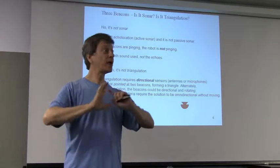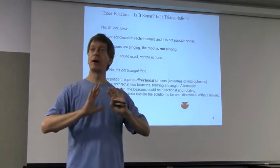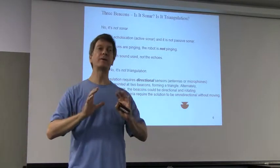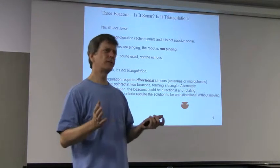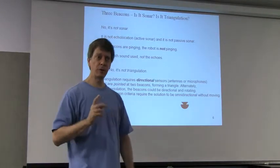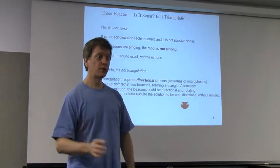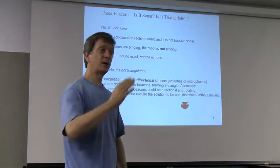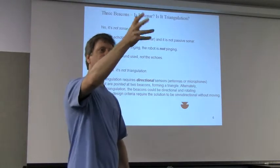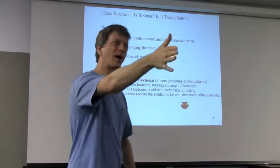So that speeds things up a little bit. But it works either way. And it is not triangulation, because with triangulation you have two directional sensors like the loop antennas or something that point at a radio source or the sound source. And you have another, and you either say, you remember where that is, and then you point and say, ooh I found another one.